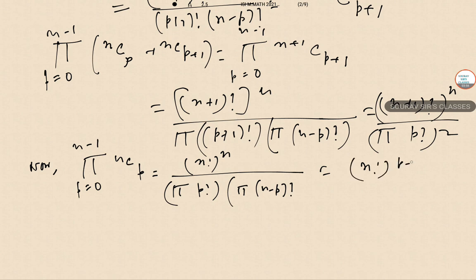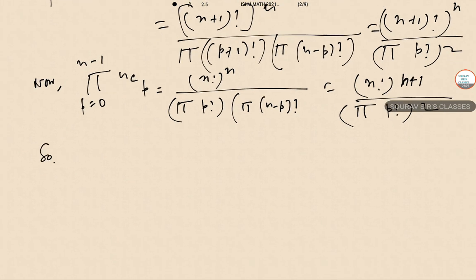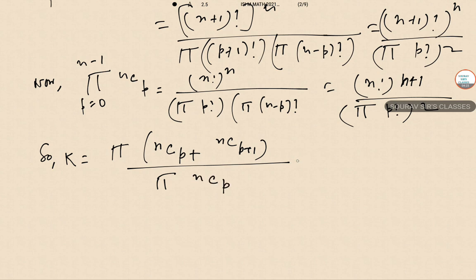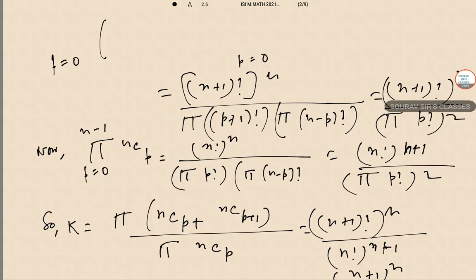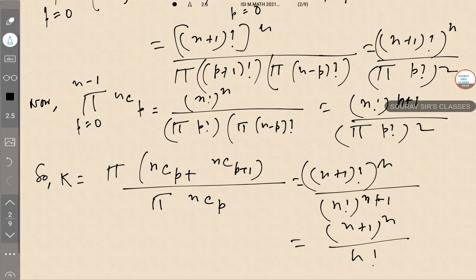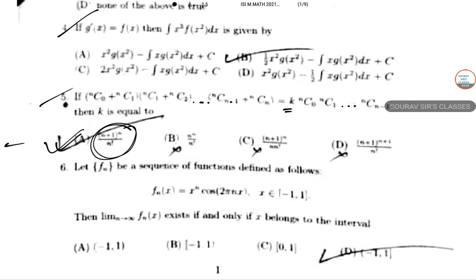The denominator is the product of (n factorial) to the power (n+1) divided by the product of p factorial squared terms. Therefore k equals (n+1) whole to the power n divided by n factorial. Option A: the answer is n+1 over n factorial to some power. So option A is the answer.